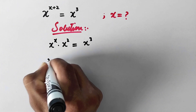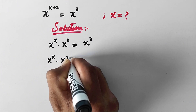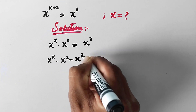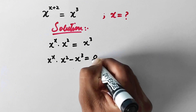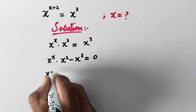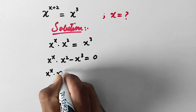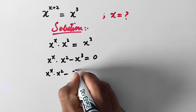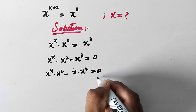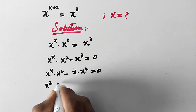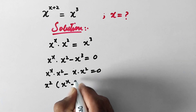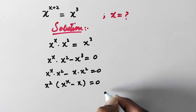And in the next step, x to the power x times x squared minus x cubed — this value will be moved to the other side — and all values are equal to 0. We can then write x to the power x times x squared minus x times x squared equals 0. And in the next step, we will take x squared as a common factor, leaving us with x to the power x minus x is equal to 0.